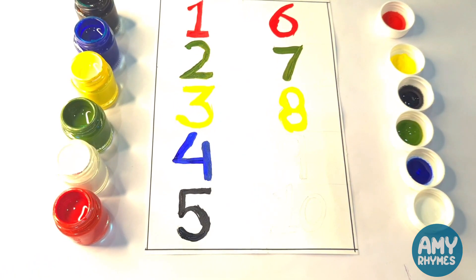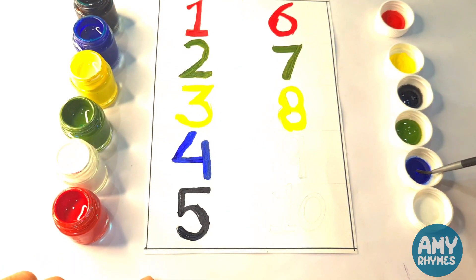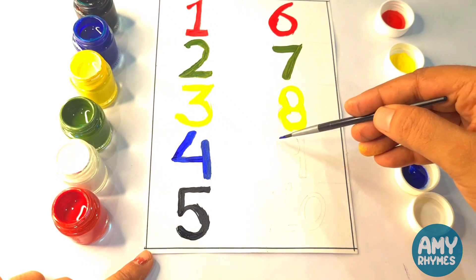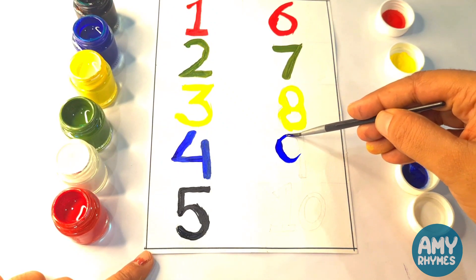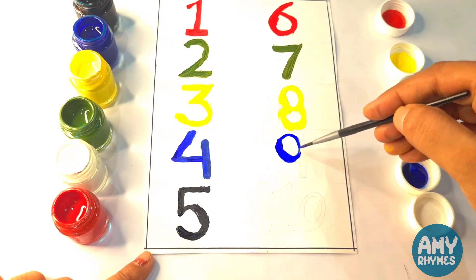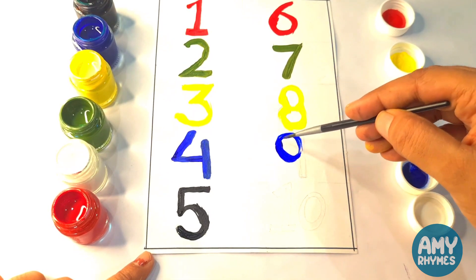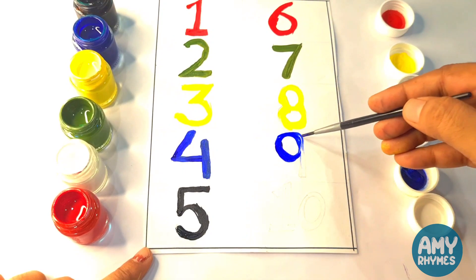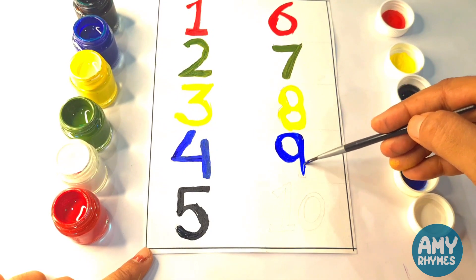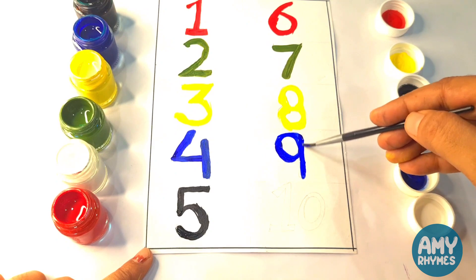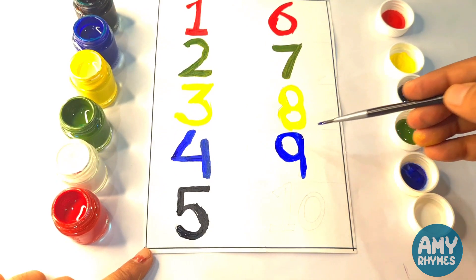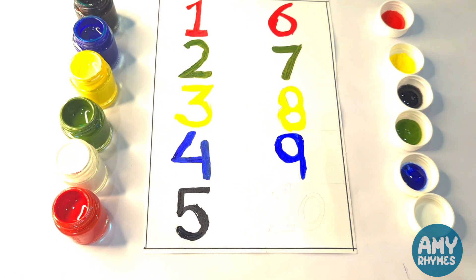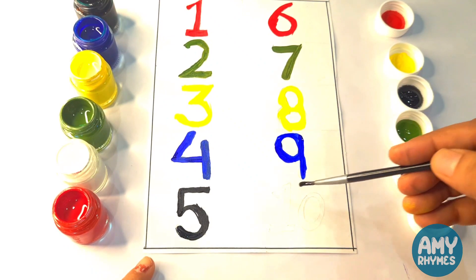Done. Next is nine. Nine, we will paint with blue color. This is blue color. It's done. Next is ten. Ten, we will paint with black color.